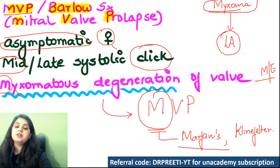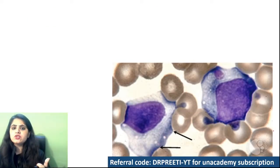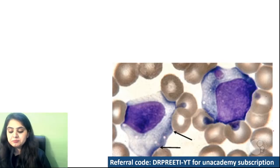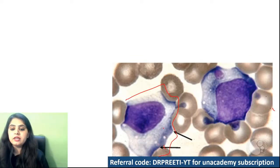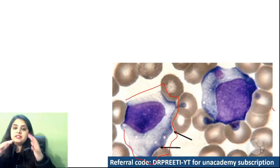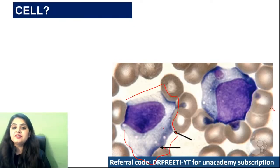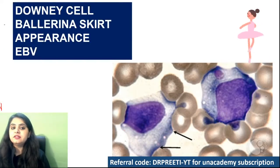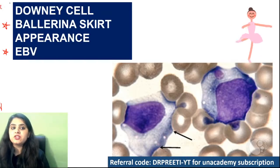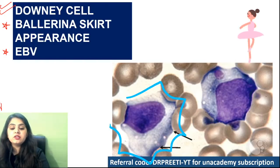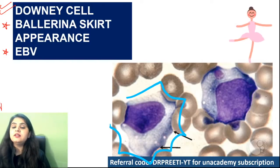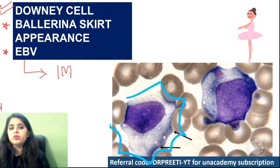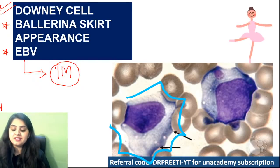We are done with five MCQs. Now three identification images. Image one: a cell with a flare — it's got a skirt-like cytoplasm, the ballerina skirt appearance. That is the Downy cell seen in Epstein-Barr virus infection. You can see the skirting of the cytoplasm — that is the Downy cell in a case of infectious mononucleosis.